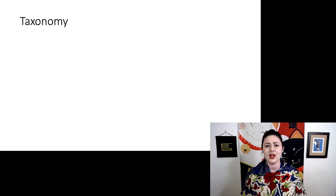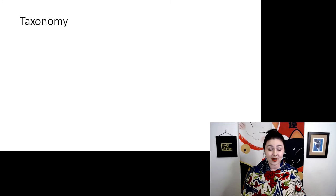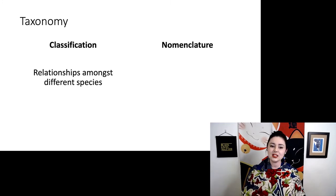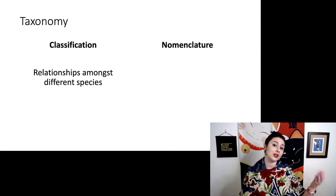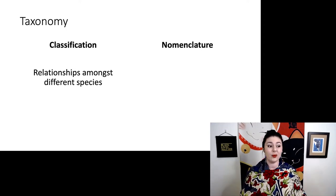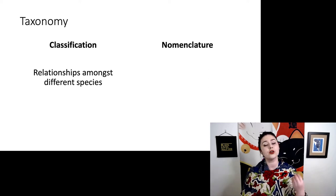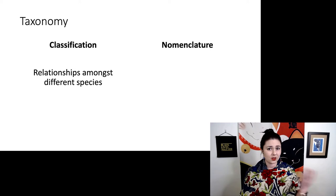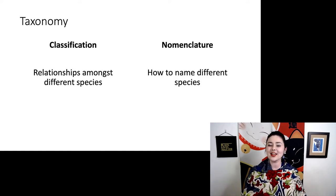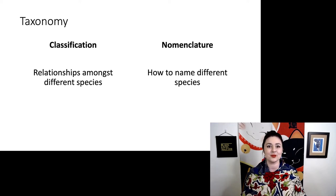But let's get back to taxonomy. There are two parts to this: first, classification and second, nomenclature. Classification is just the relationships amongst different species. We have so many species, and we want to figure out who is more closely related to whom and make sense of it, because if we just have a couple million species, that's a little bit much to tackle.